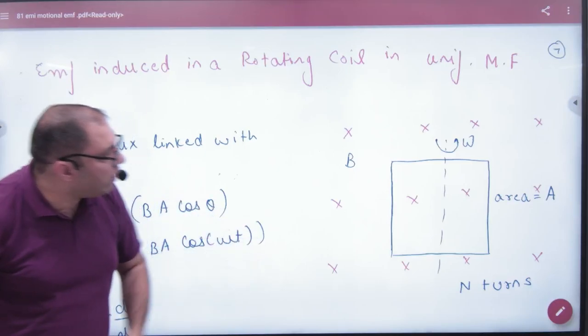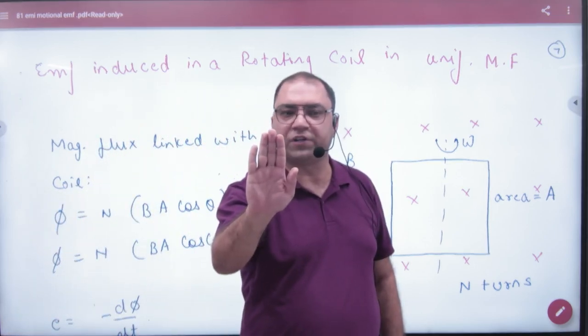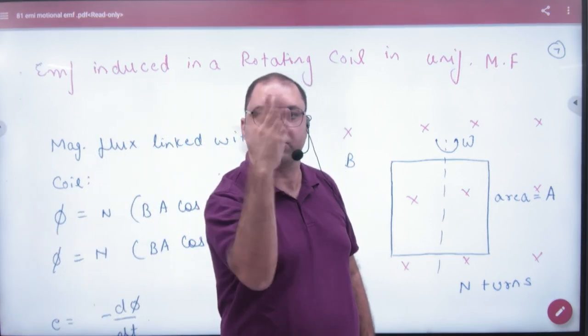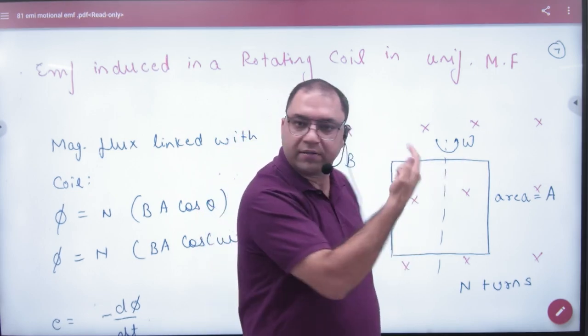EMF induced in a rotating coil in a uniform magnetic field. Now what is it? It says that the rectangular loop has a number of turns. It goes into the magnetic field. So it rotates with omega. Area is A.